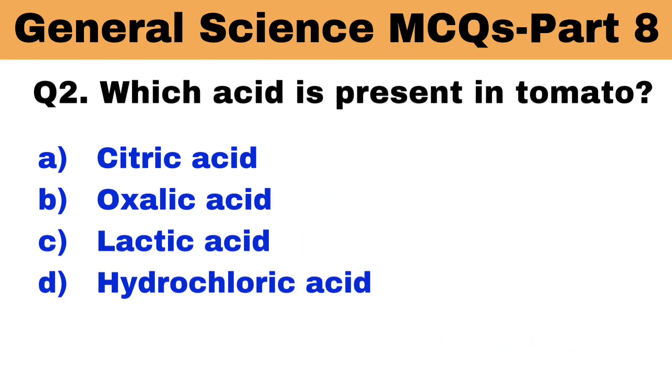Question number 2. Which acid is present in tomato? The right answer is option B: oxalic acid.